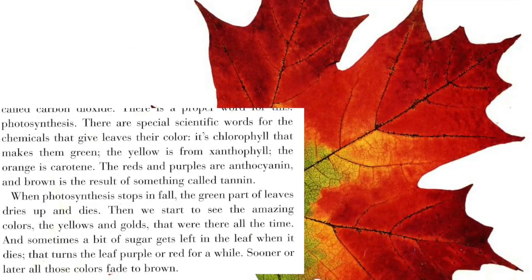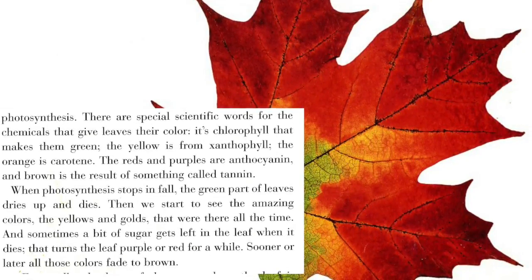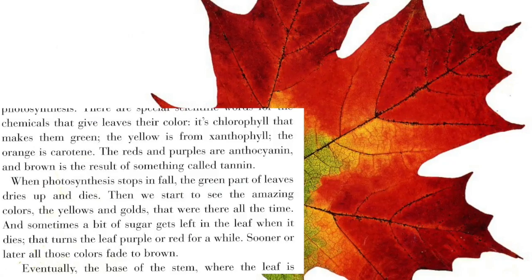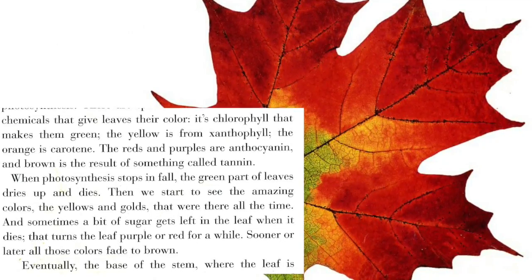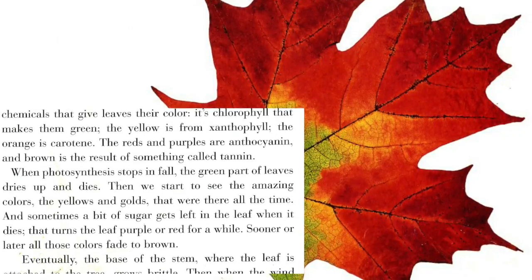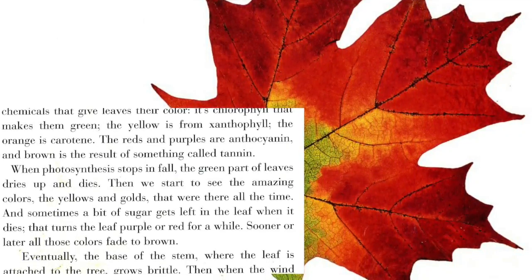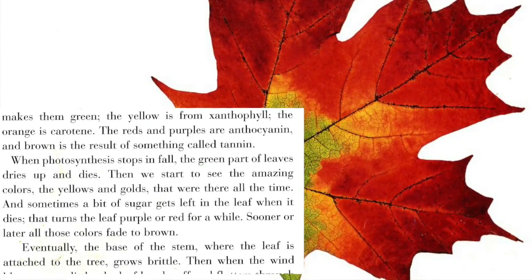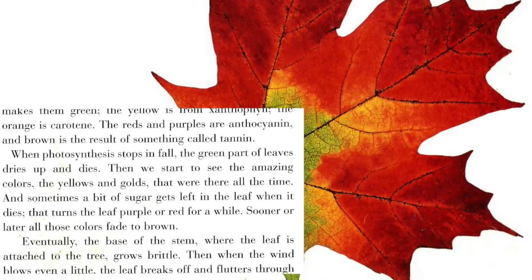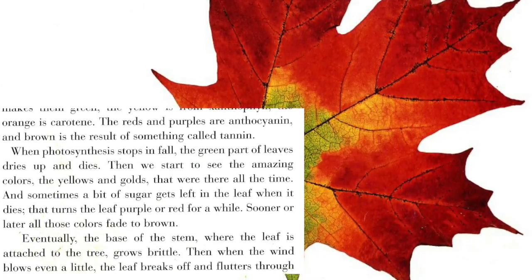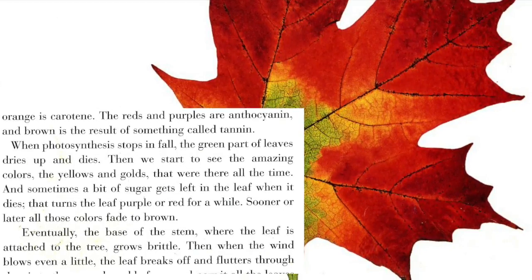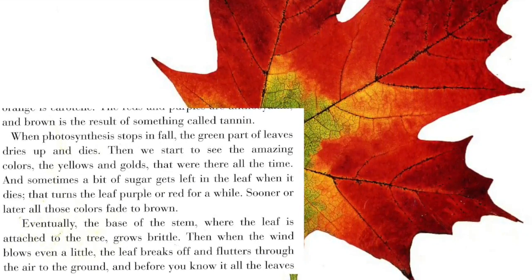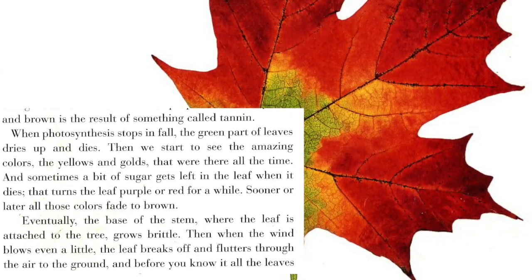When photosynthesis stops in fall, the green parts of leaves dry up and die. Then we start to see the amazing colors — the yellows and golds — that were there all the time. And sometimes a bit of sugar gets left in the leaf when it dies. That turns the leaf purple or red for a while. Sooner or later, all those colors fade to brown.